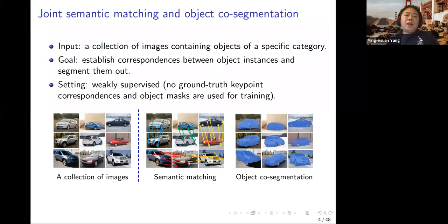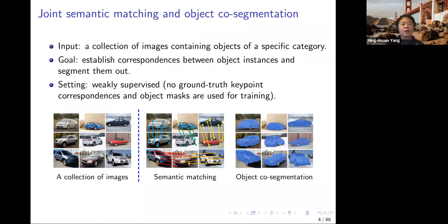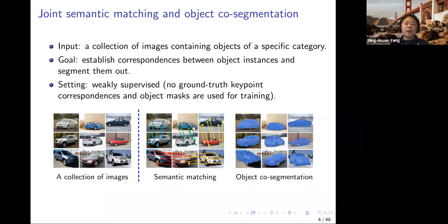So the main idea in this work is to solve semantic matching and object co-segmentation at the same time. The input is a pair of images containing objects of a specific object class, and we want to establish correspondence between object instances and use them for segmentation. The setting is based on weakly supervised learning — all we have is a pair of images or more images containing instances of the same object class, and we use that as a supervisory signal for training.